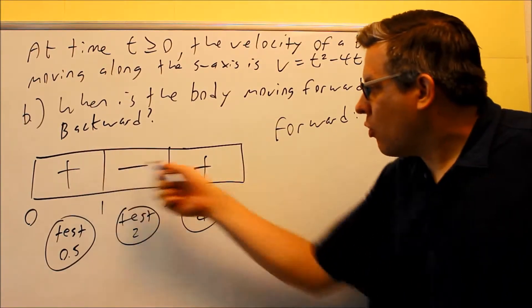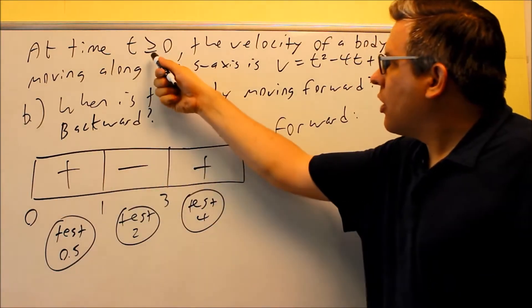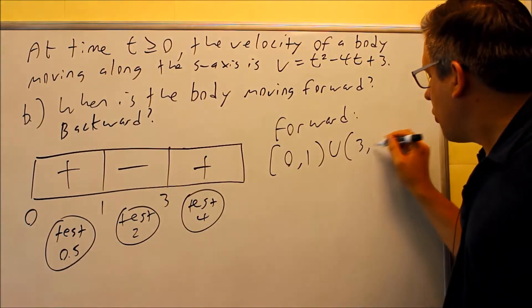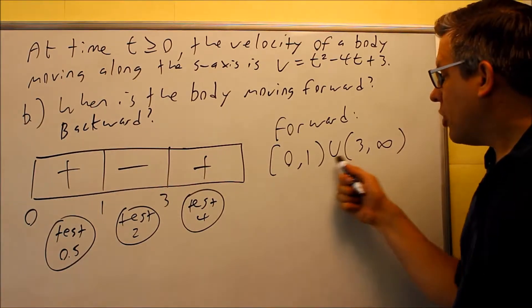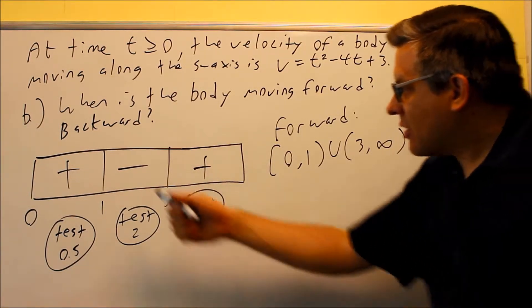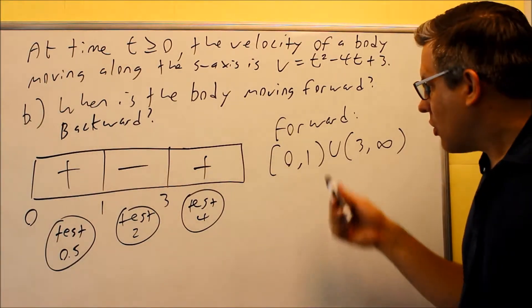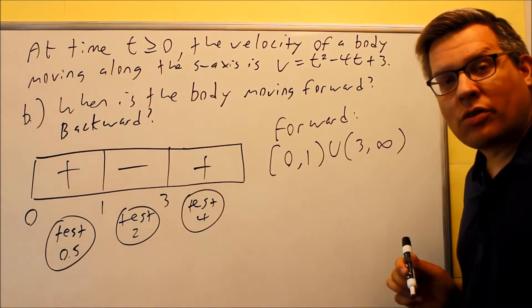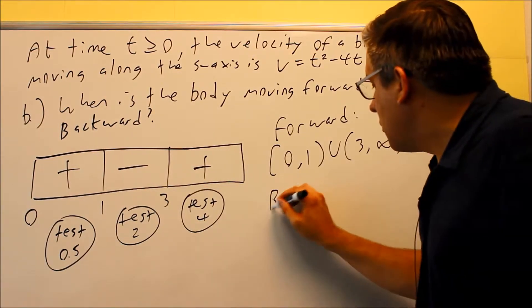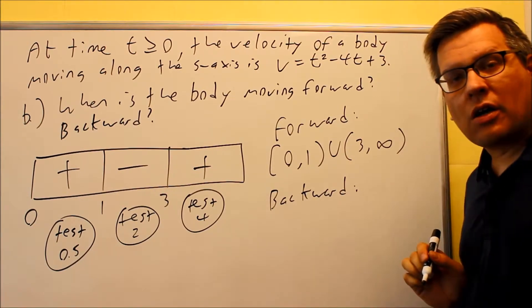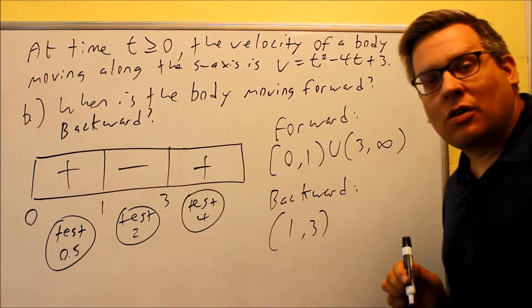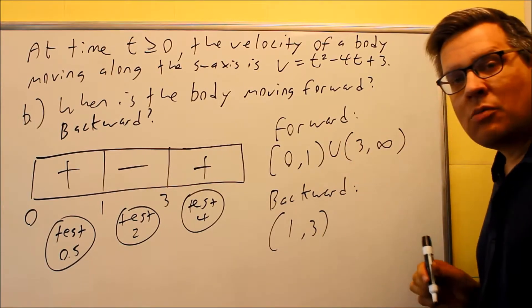Forward means the intervals where the sign is positive. 0 is included because of the equal sign, so we go from 0 to 1 seconds, and also from 3 to infinity. I'm not putting brackets on 1 and 3 because at those points the body is actually not moving at all — velocity is zero, so it's not considered plus or minus. Infinity always gets a parenthesis. For backward, that's where we have a negative sign — between 1 and 3. Again we're not including the endpoints.